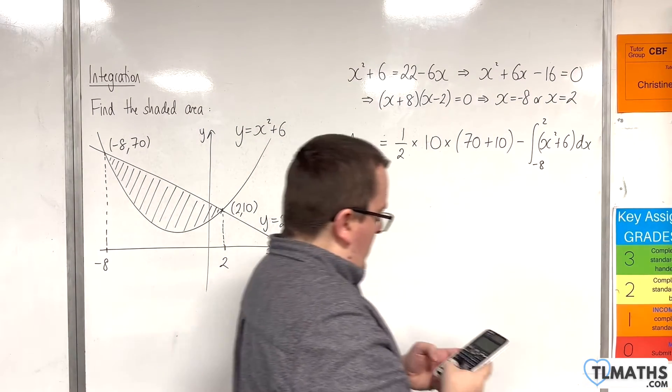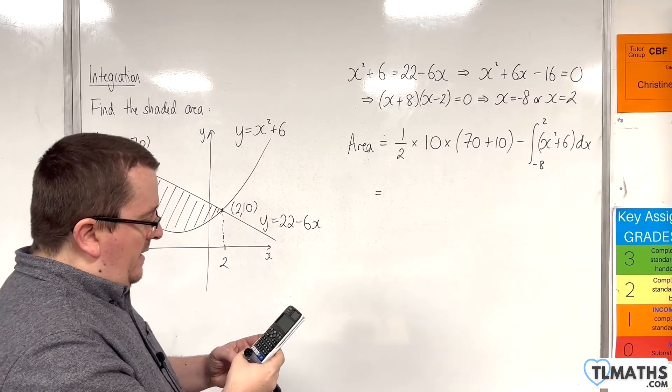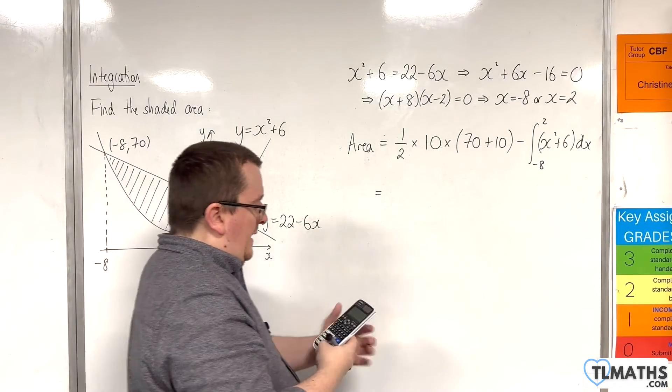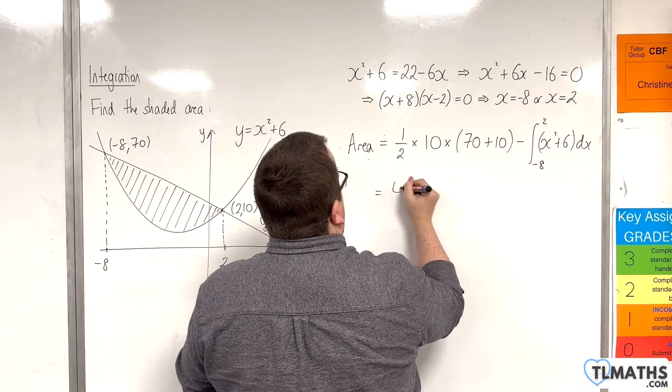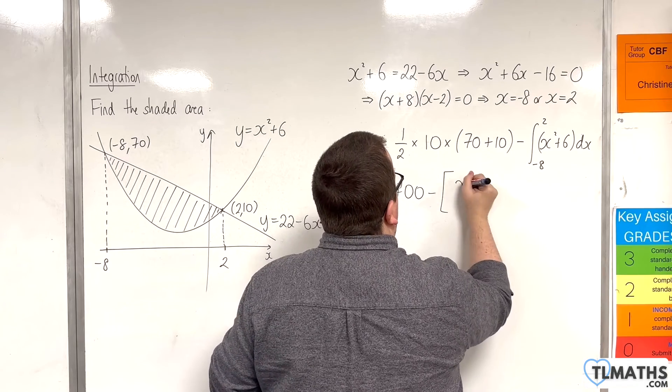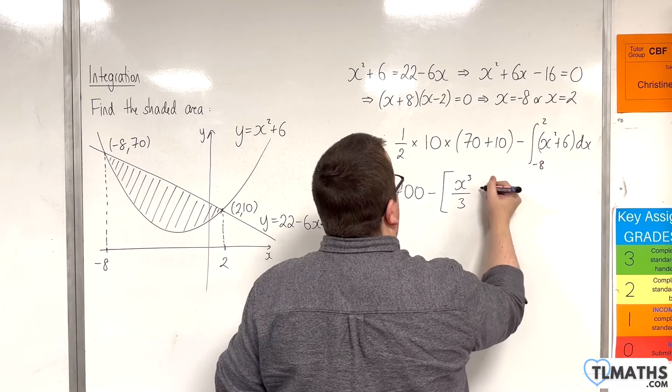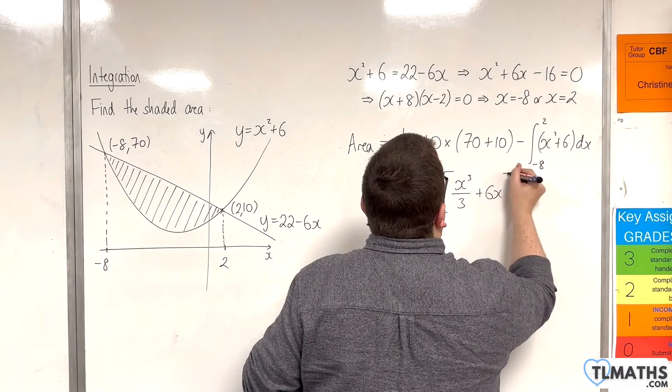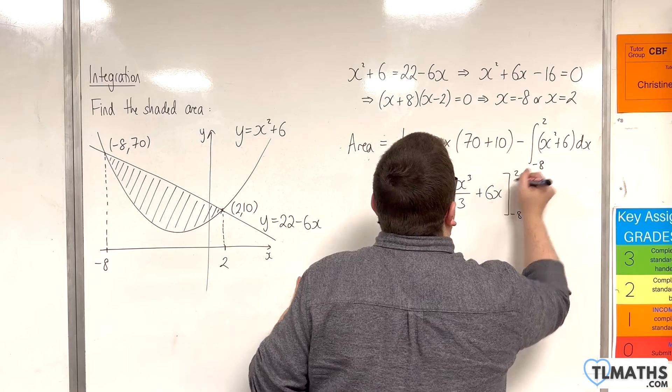So, we have 0.5 times 10 times 80, so 400. Then, take away, so let's integrate. So, we're going to have x cubed over 3, so add 1 to the power divided by the new power, plus 6x, evaluated between minus 8 and 2.